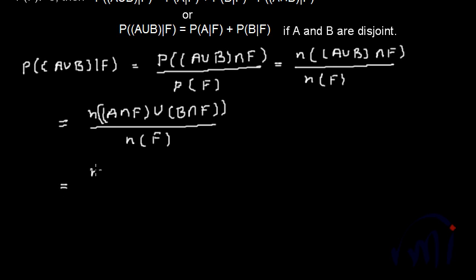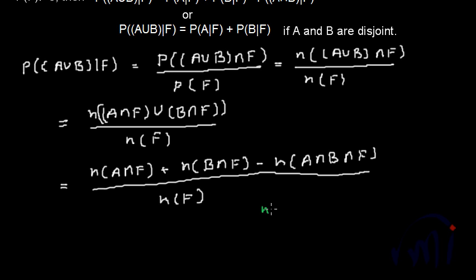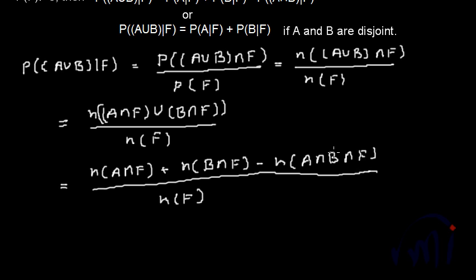This equals the number of elements in A∩F, plus the number of elements in B∩F, minus the number of elements in A∩B∩F. This follows from set theory — if you replace A by A∩F and B by B∩F, the union of those two sets gives F only once. It is very important to know your set theory properly; if you have any doubt you can go through the videos on set theory.